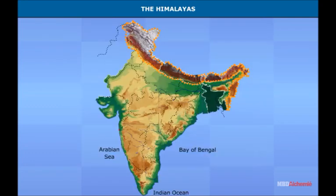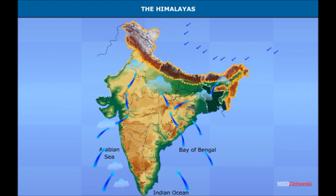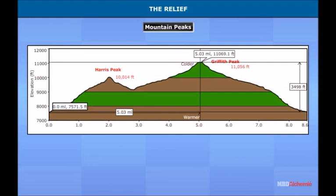The Himalayas act as a climate barrier on our northern boundary. They do not allow the monsoon winds to leave the region, nor do they allow the cold polar winds blowing from the north to enter the Indian subcontinent. Relief refers to appreciable differences in height of any terrain.